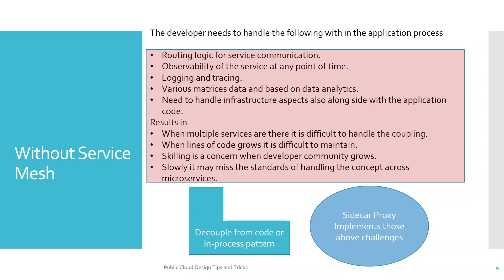Handling this kind of responsibility results in difficulty when you have multiple services, because it becomes hard to manage the coupling with your microservices code. When lines of code grow or when you have more microservices, it is difficult to maintain. Scaling is always a challenge where you have to deal with different libraries or SDKs. From an organization perspective, it starts missing standardization across microservices for handling those capabilities. These are the disadvantages when you are not using a service mesh.